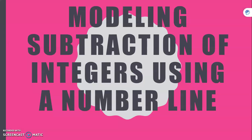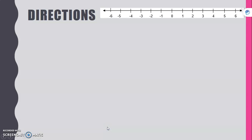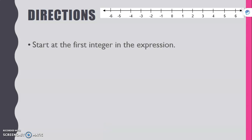Modeling subtraction of integers using a number line. These are the directions we are going to be using. We're going to start at the first integer in the expression — whatever integer is given first from left to right, we're going to start there.